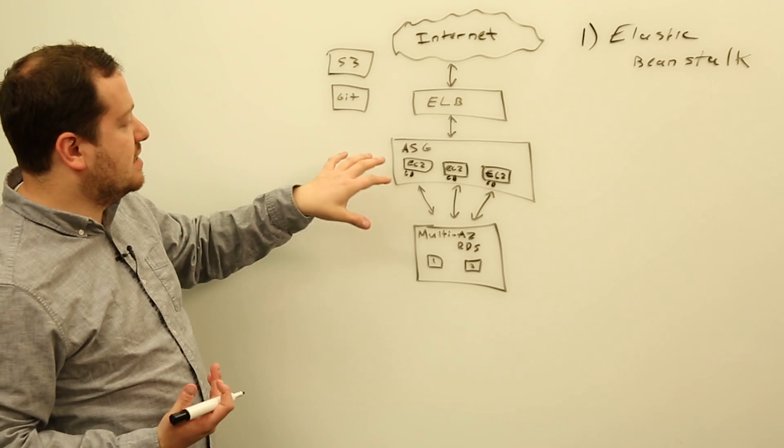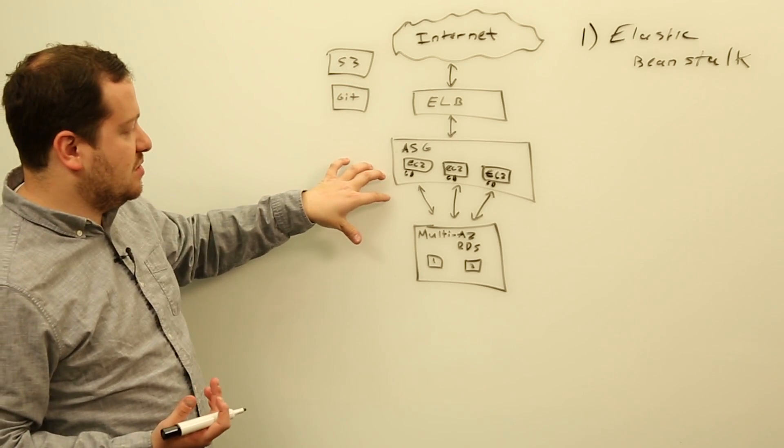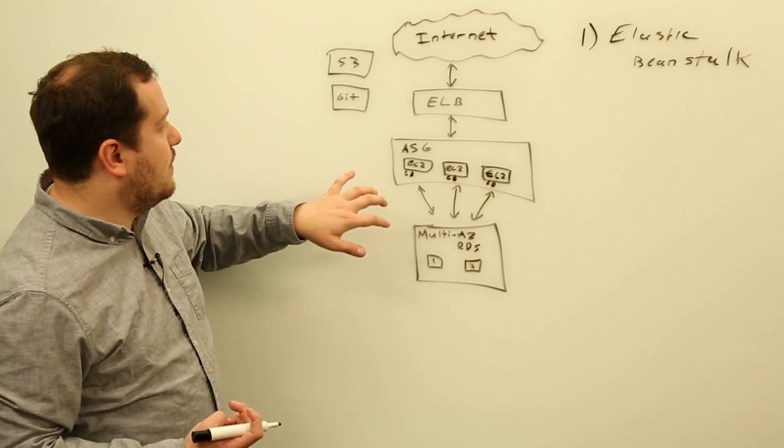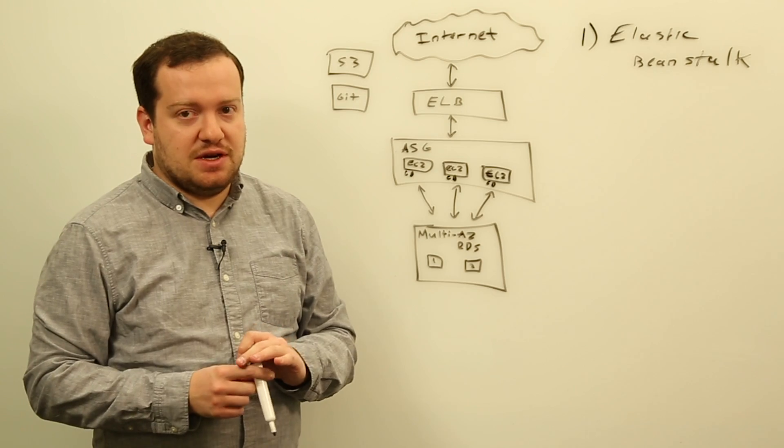It's going to set up your ELB, it's going to set up your autoscaling group with your EC2 instances, and it's going to set up your Multi-AZ RDS instances. Now, Elastic Beanstalk supports several containers.